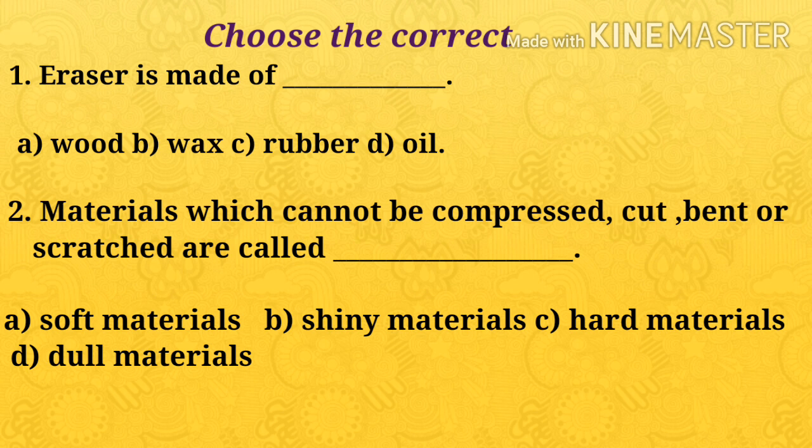Choose the correct answer. First one: eraser is made of dash — options are wood, wax, rubber, oil. Which is the answer? Rubber. Eraser is made of rubber.